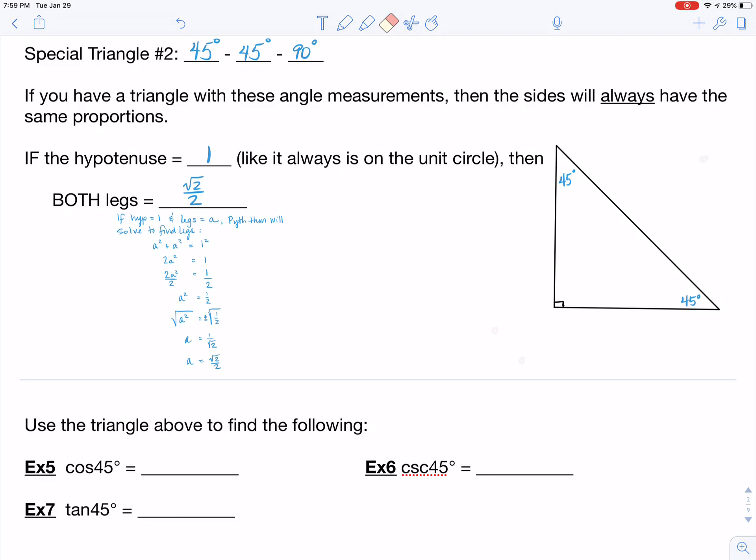But what that means then is that if my hypotenuse is one over here on my picture, then both of the legs will always be the value of root two over two.